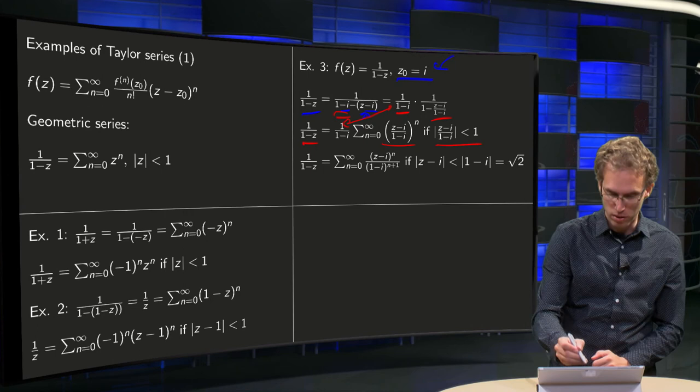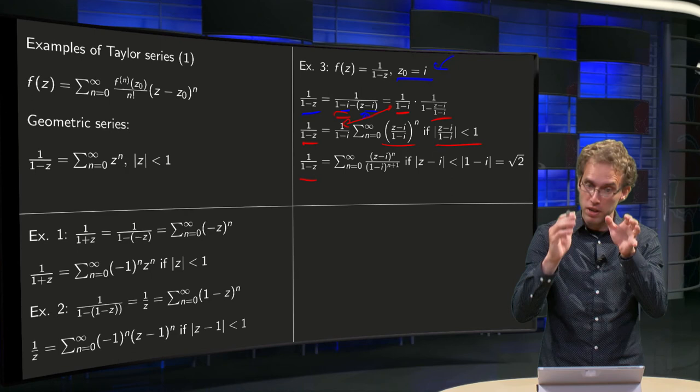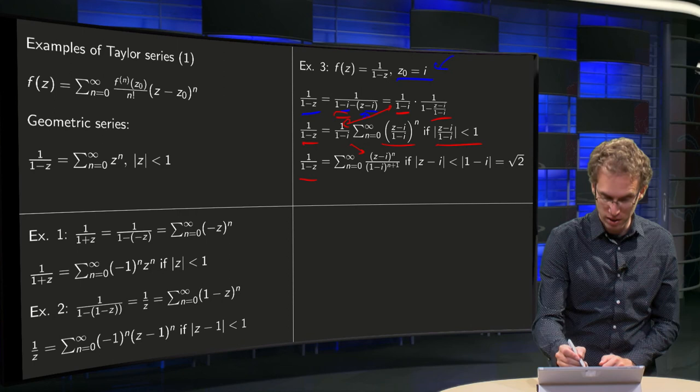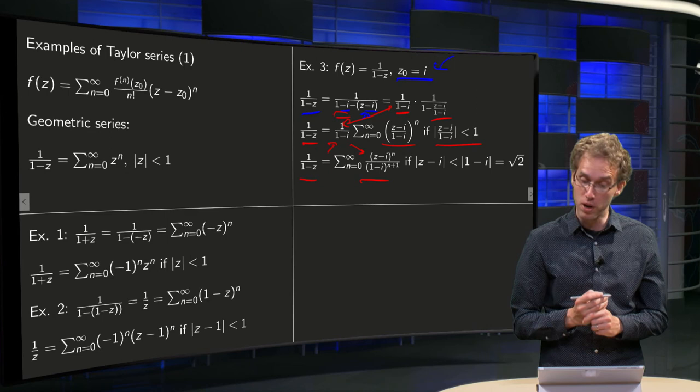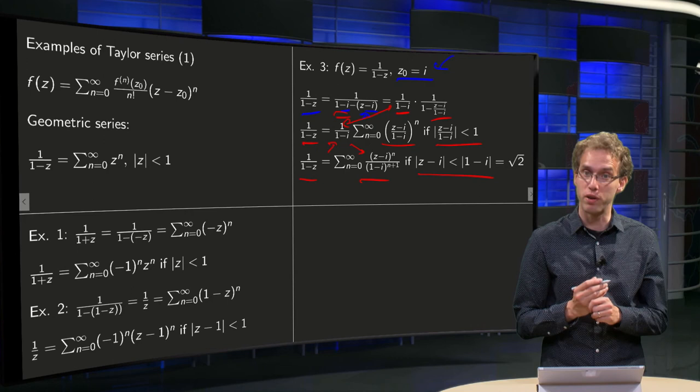So let's clean up a bit. So 1/(1-z) equals (z-i)^n in the numerator, (1-i)^n in the denominator. This is an additional factor of 1/(1-i) becomes (1-i)^(n+1). If |z-i| < |1-i|, which equals √2.